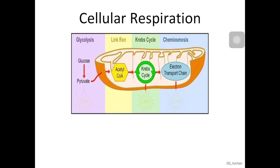From the previous video, you have covered the reactions that happen in cellular respiration. Our cellular respiration starts from one glucose molecule, which will undergo glycolysis, followed by link reactions or pyruvate oxidation, then Krebs cycles, and finished by oxidative phosphorylation, which involves the electron transport chain and chemiosmosis.